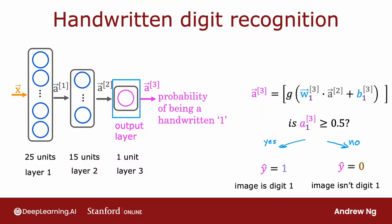The final step is then to compute a3. And we do so using a very similar computation, only now this third layer, the output layer, has just one unit, which is why there's just one output here. So a3 is just a scalar.